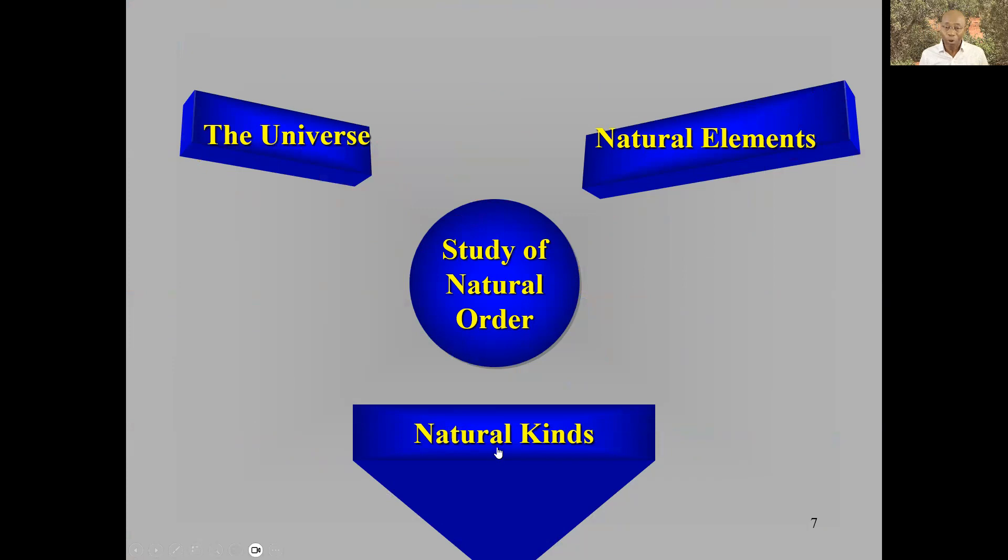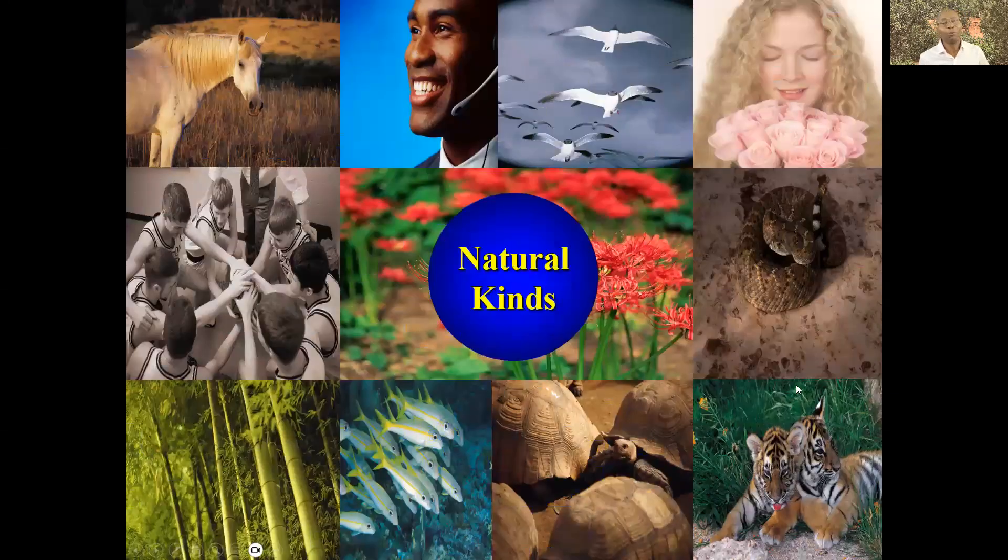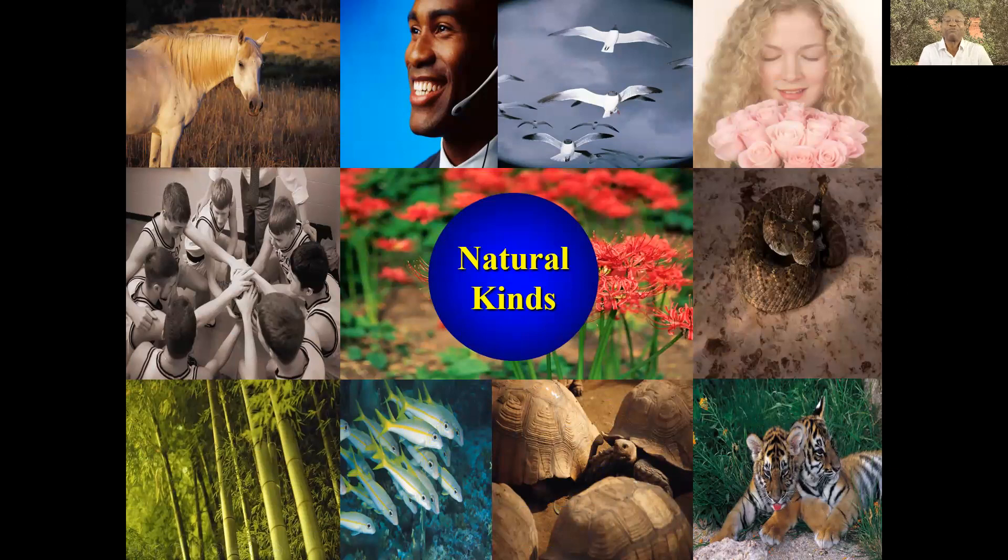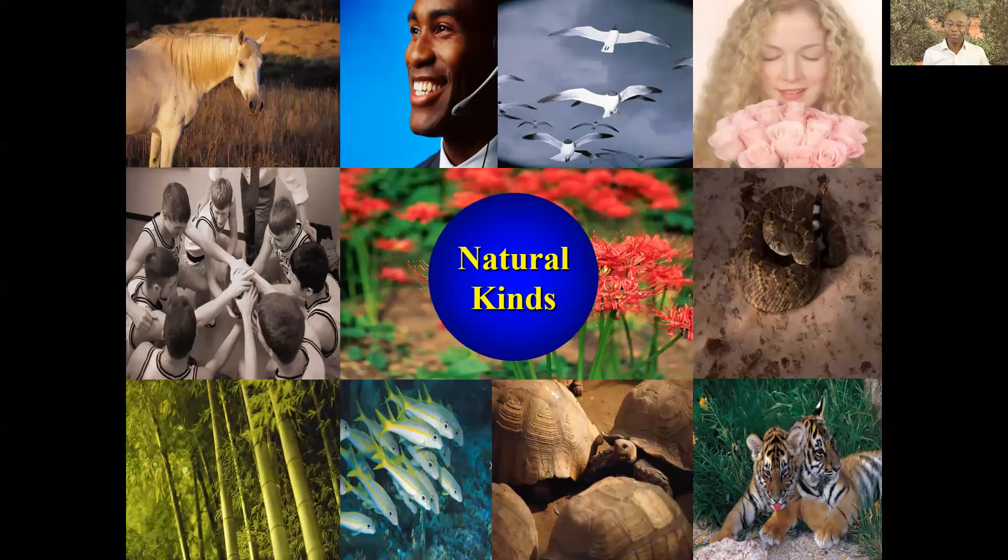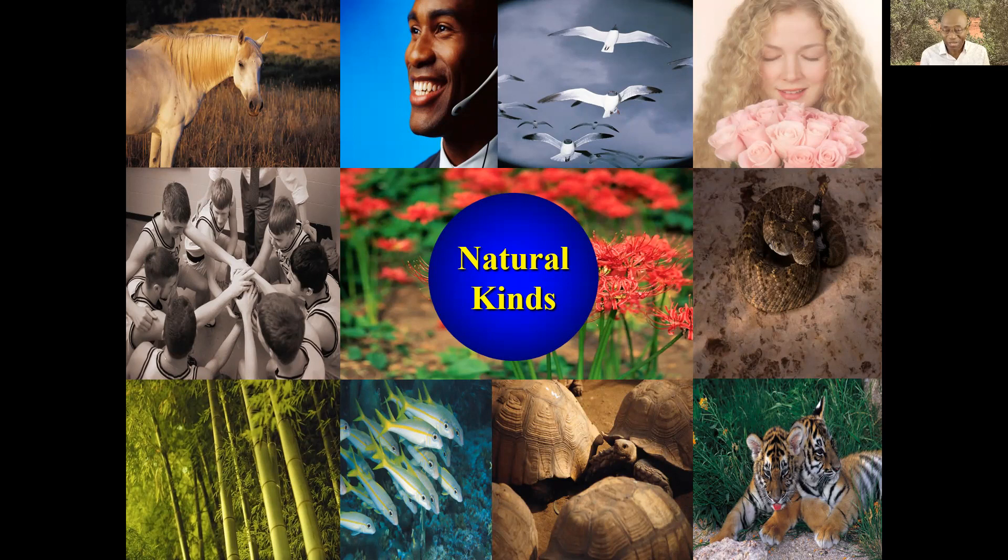And then, where else do you have order? I'll give you a few seconds to guess what are natural kinds. Well, did you guess? So you want to explain reality by looking at nature itself, what nature has produced, not cars and motorcycles. So what nature has produced is these things called life forms. We call them natural kinds. The ancient call them natural kinds.